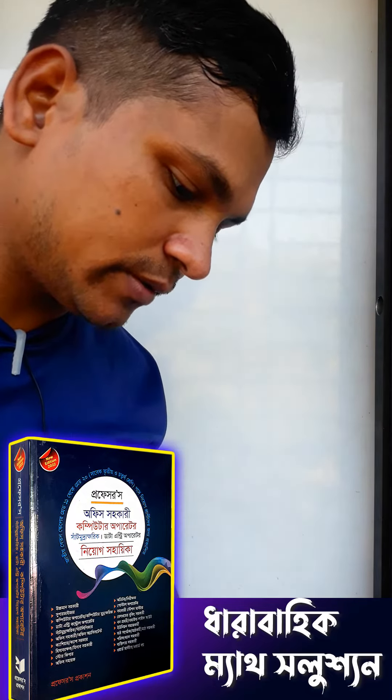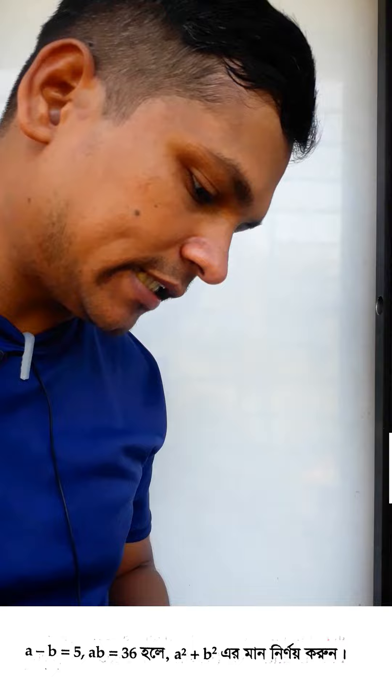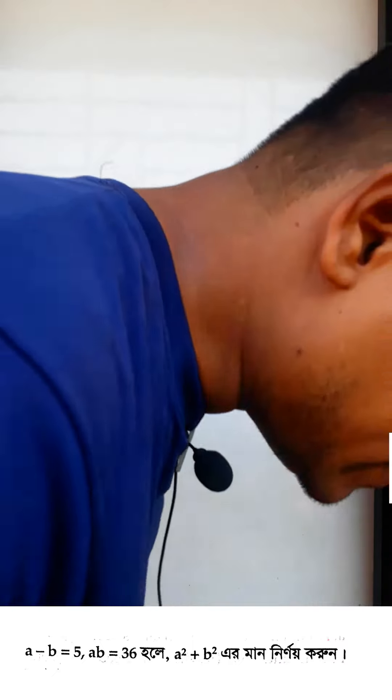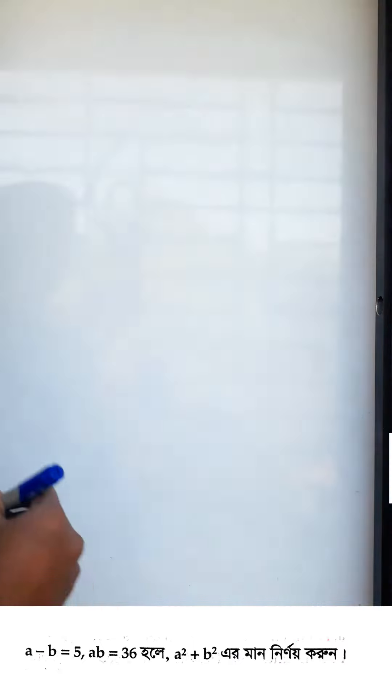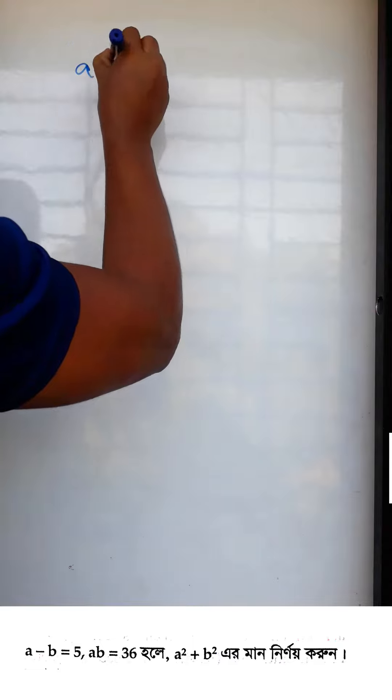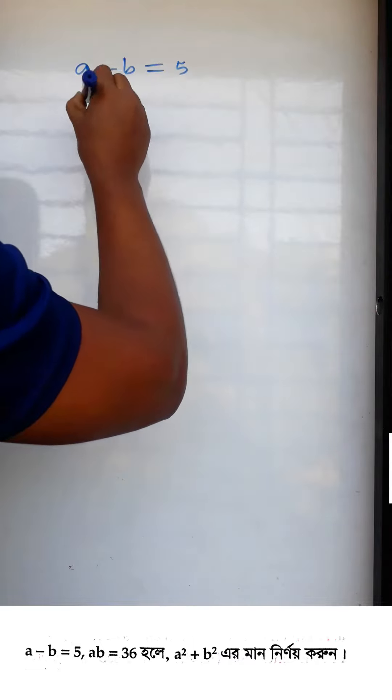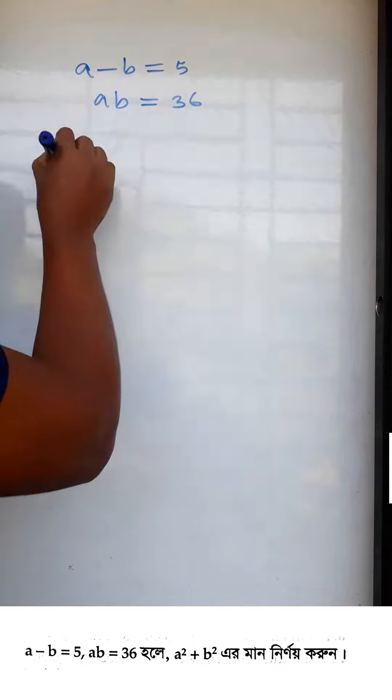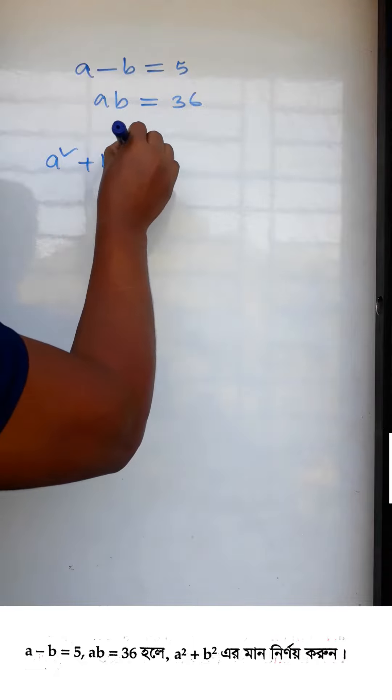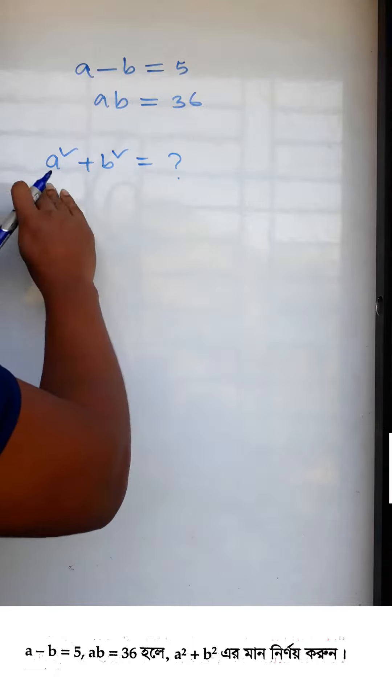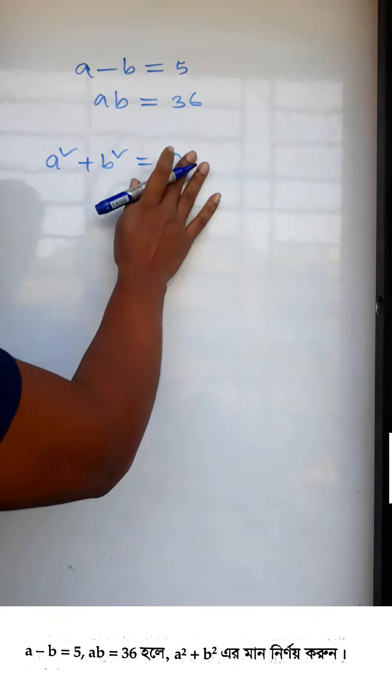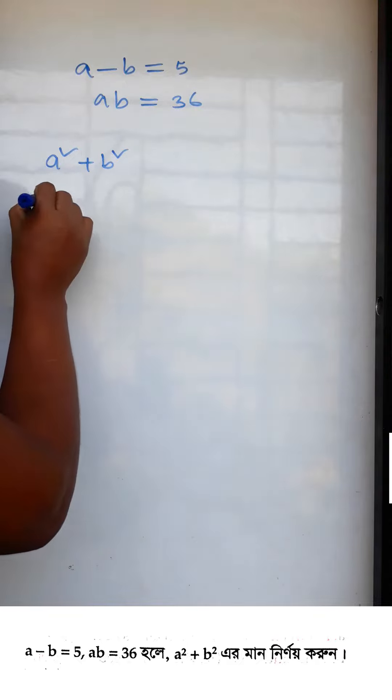Given a minus b equals 5, and ab equals 36, find a square plus b square. Looking at the formula, we need to find a square plus b square.